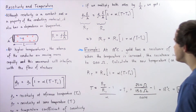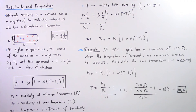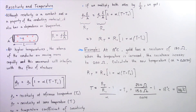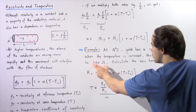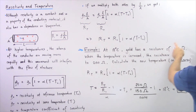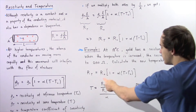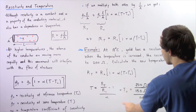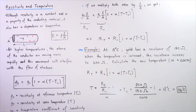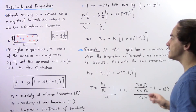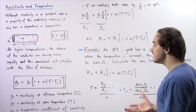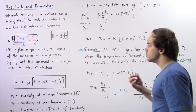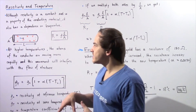So T₀ is given as 18 degrees Celsius, α for gold is 0.0034, R_T is 200 ohms, and R₀ is 150 ohms. Substituting these values, we get approximately 116 degrees Celsius as the temperature at which our resistance is 200 ohms.